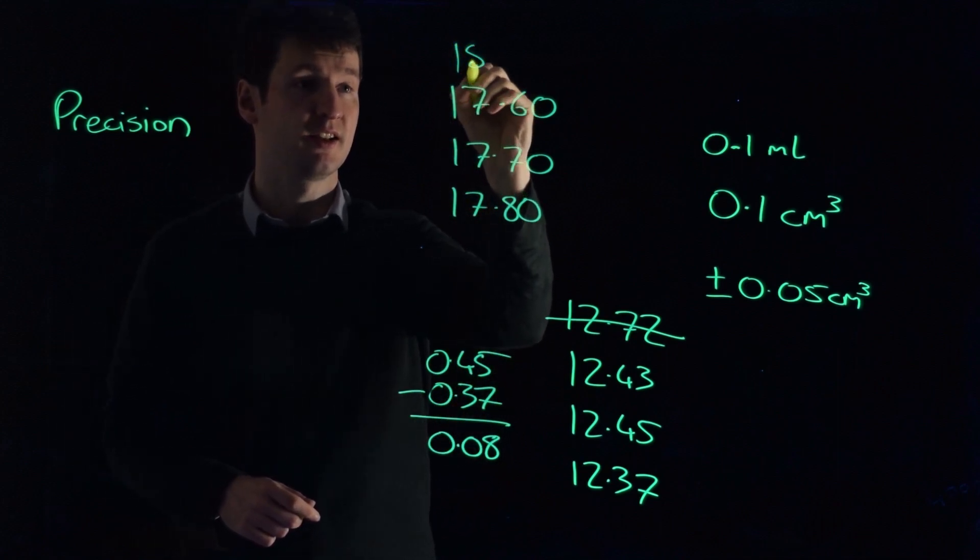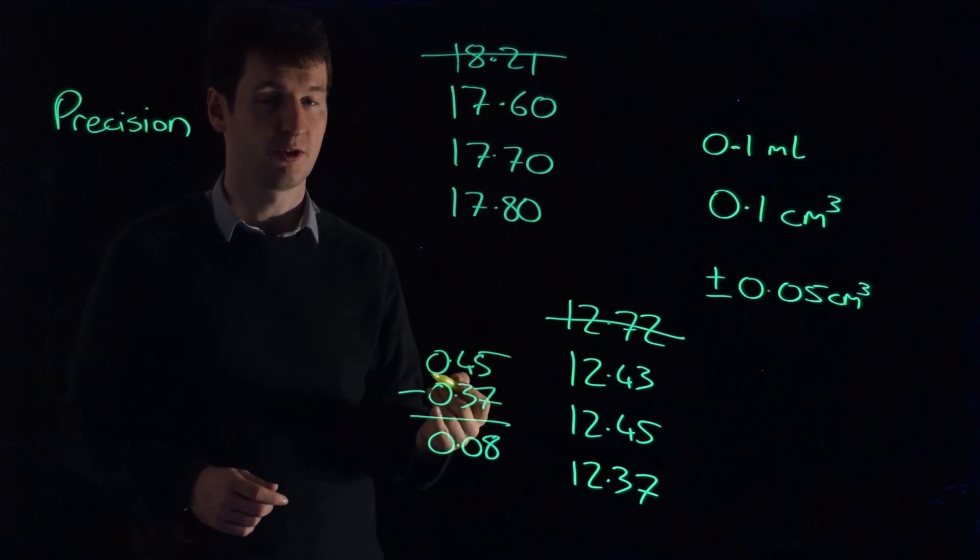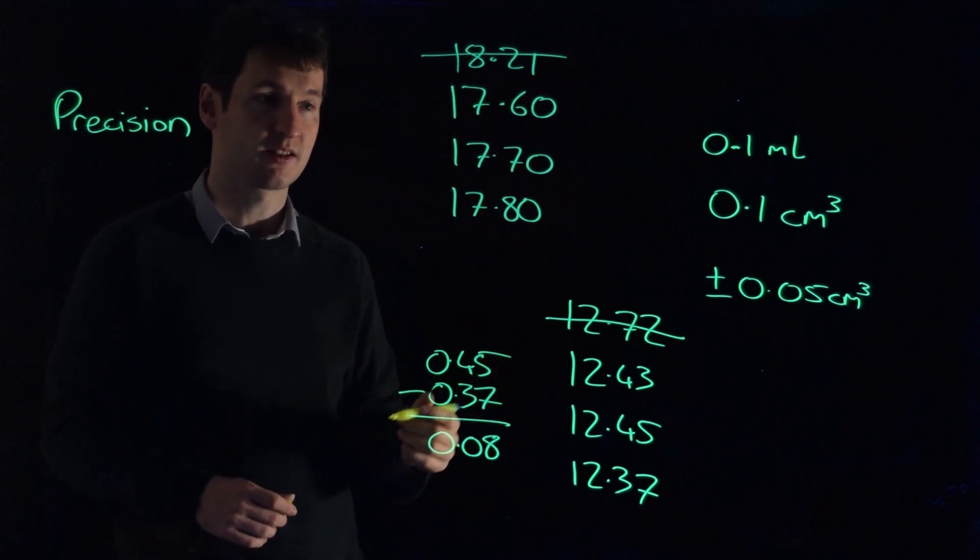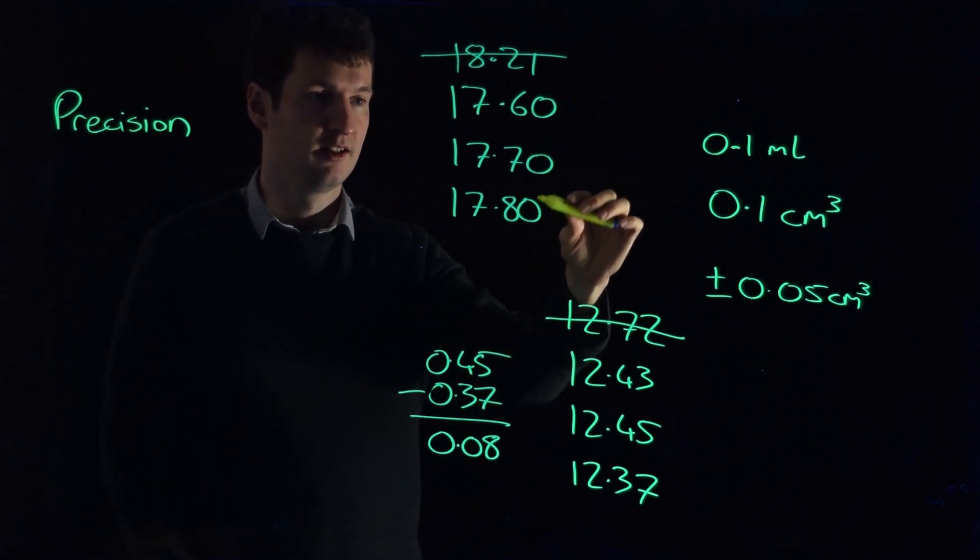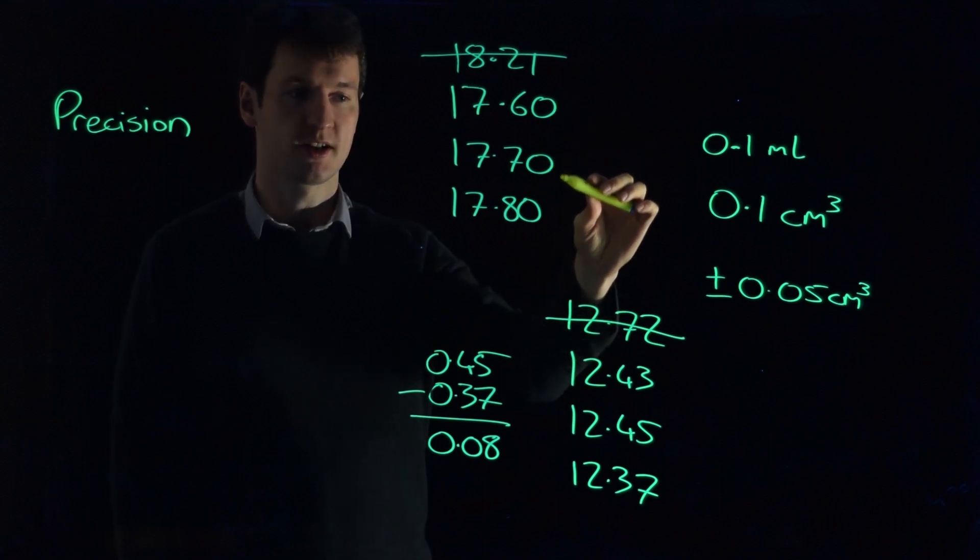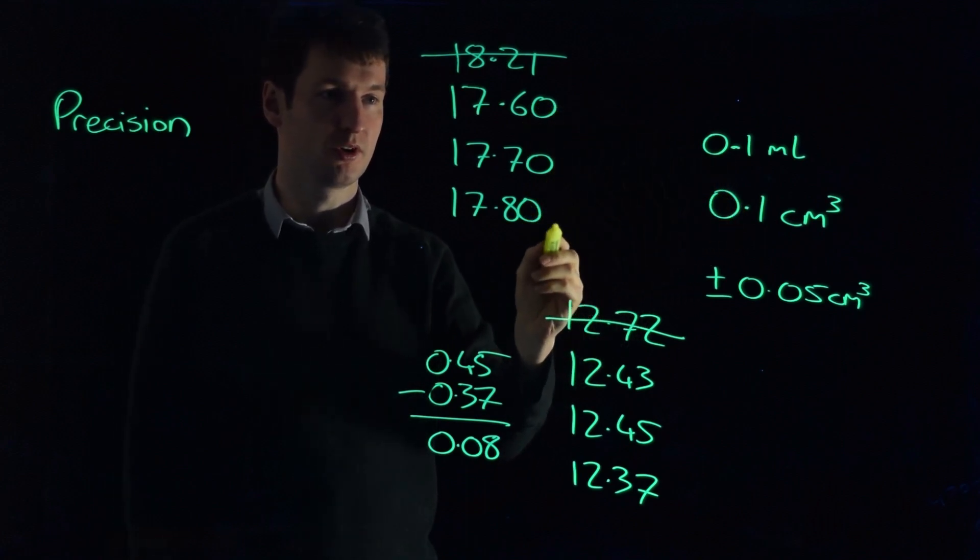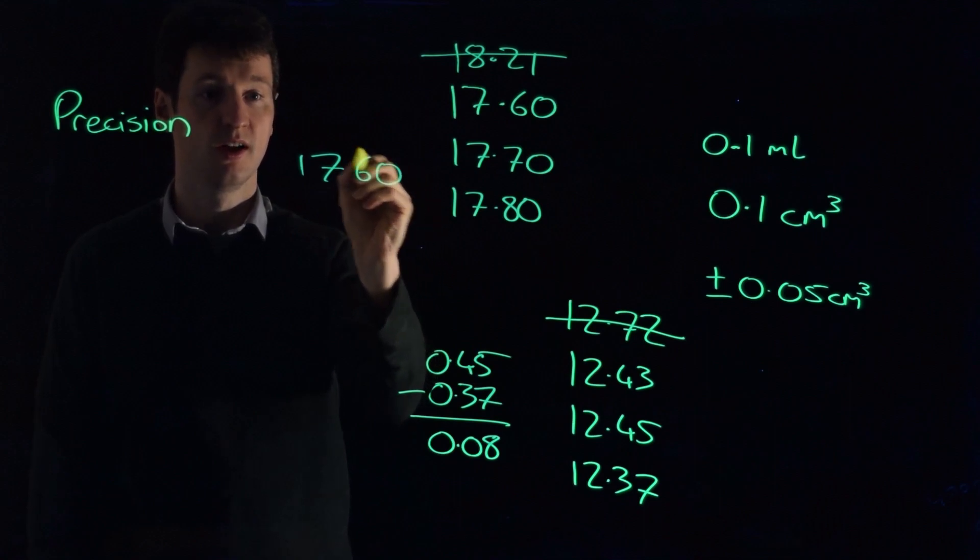And of course, we've obviously had some other number that we've discarded out of this that was our rough titration to begin with to let us establish a rough range. What about these? Well, you might be given to thinking that, well, the difference between this is 0.1 and the difference between this is 0.1, so you're okay. But the total difference has to be 0.1. So if you take 17.60 away from 17.80,